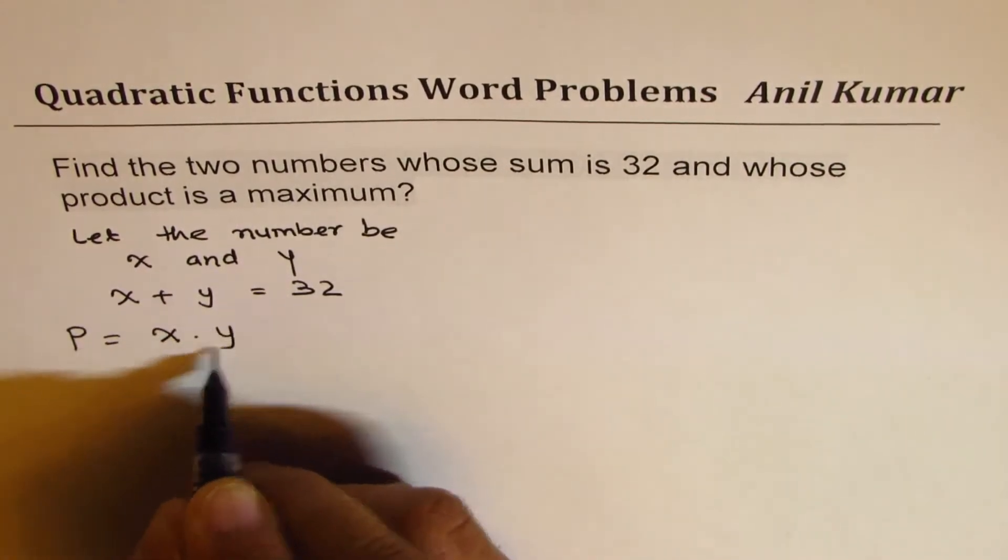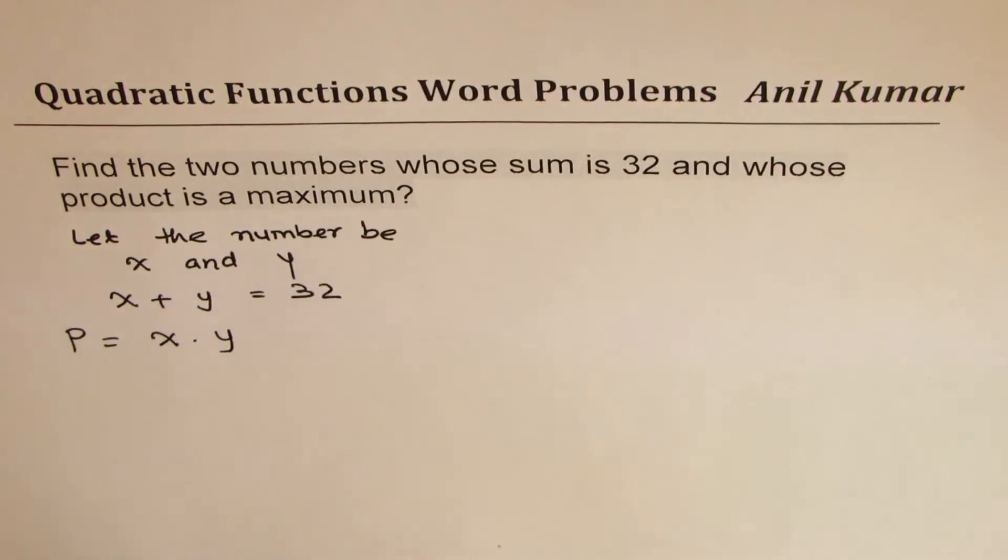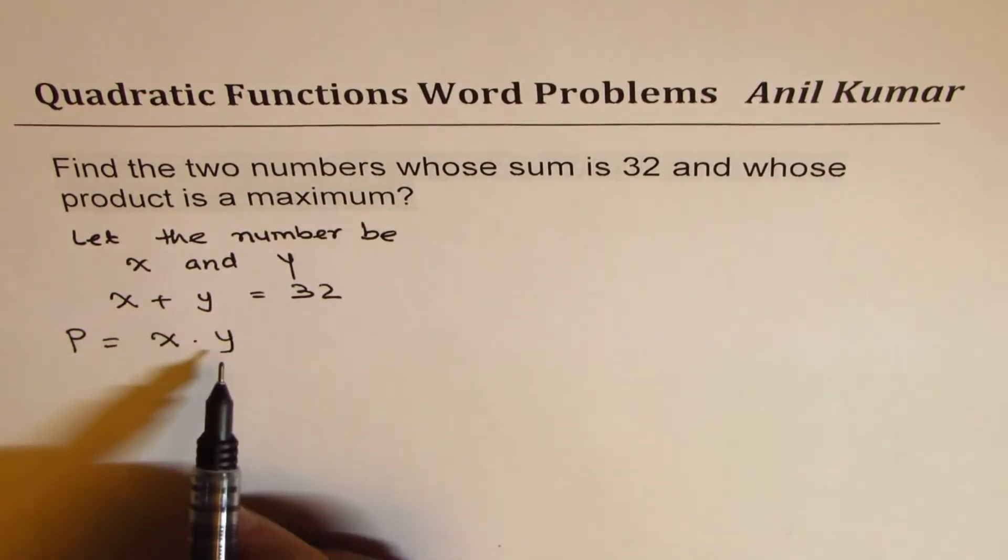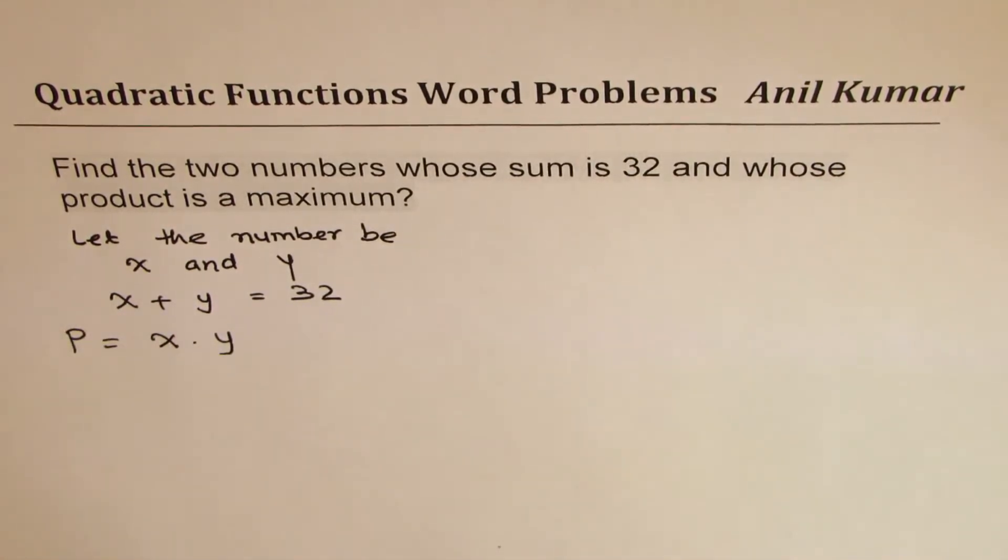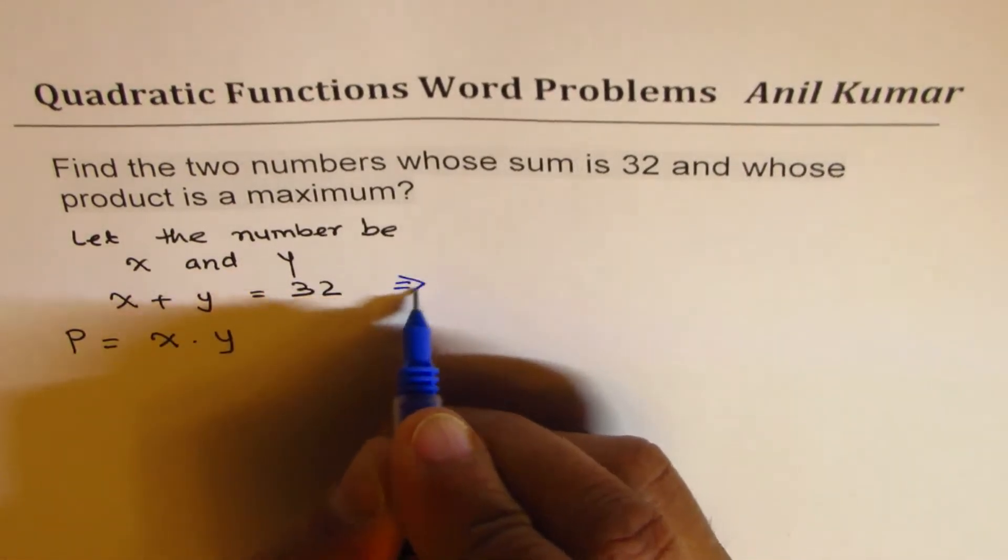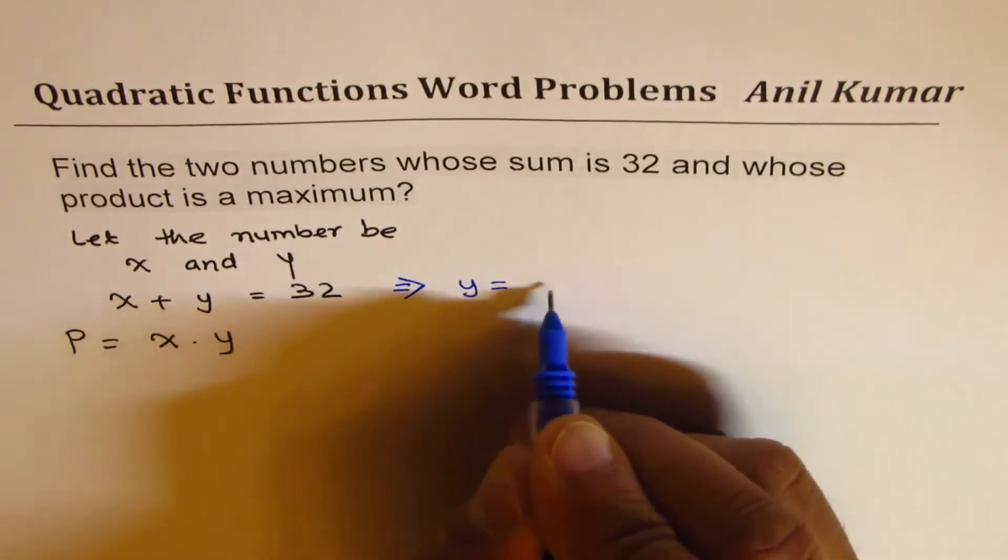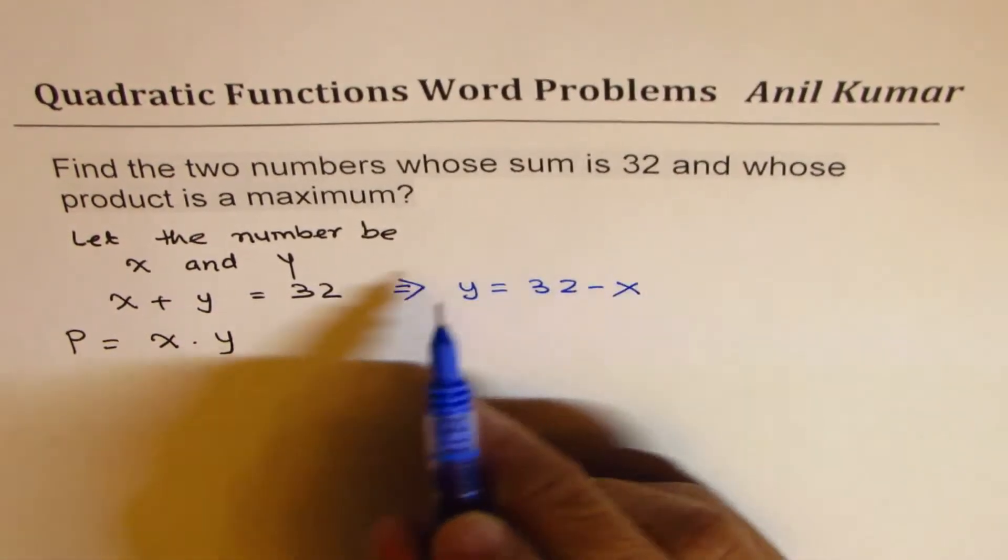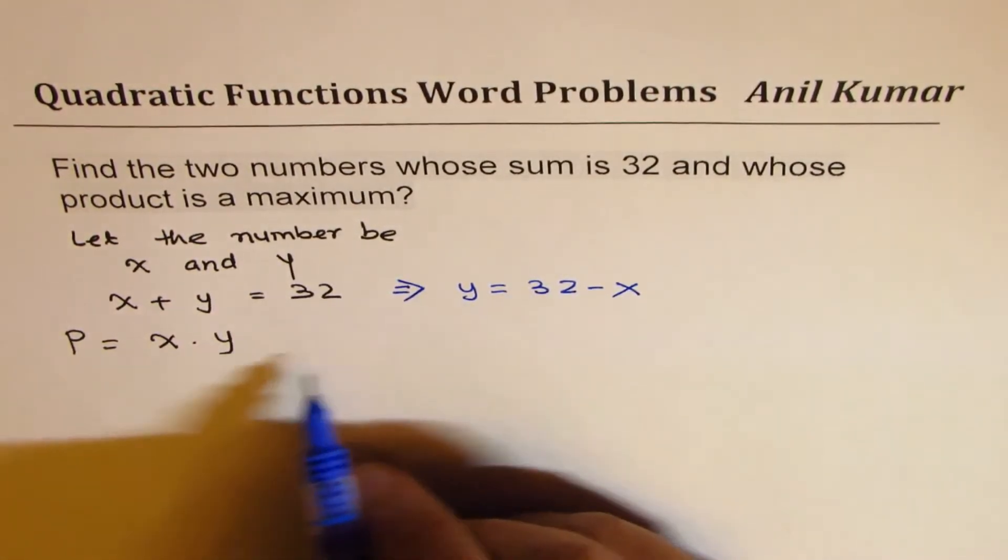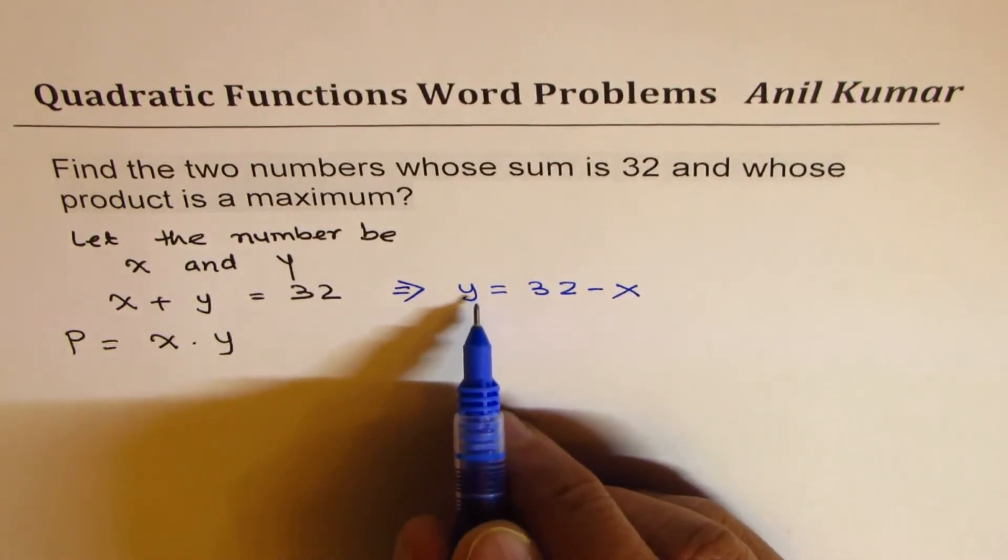We want to maximize the product, so the idea is write in one variable. From the first equation you can write y as equal to 32 minus x. Now this is very important, we'll substitute here and at the end we can find the other number using this equation.